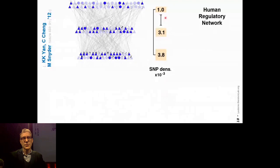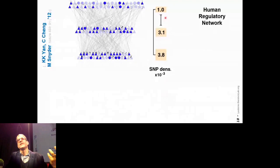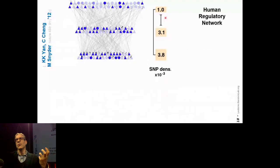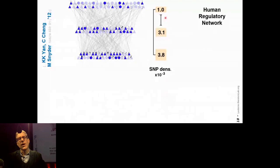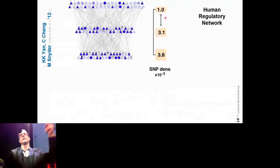One thing we got into was comparing the human regulatory network to other networks. A favorite comparison was done by this brilliant postdoc, Kun Kyu Yan, who compared the biological regulatory network — kind of like the network of our biological operating system — to the network instantiated by a computer operating system: the Linux call graph network. The Linux call graph is the network of one routine calling another, which calls another and so forth.